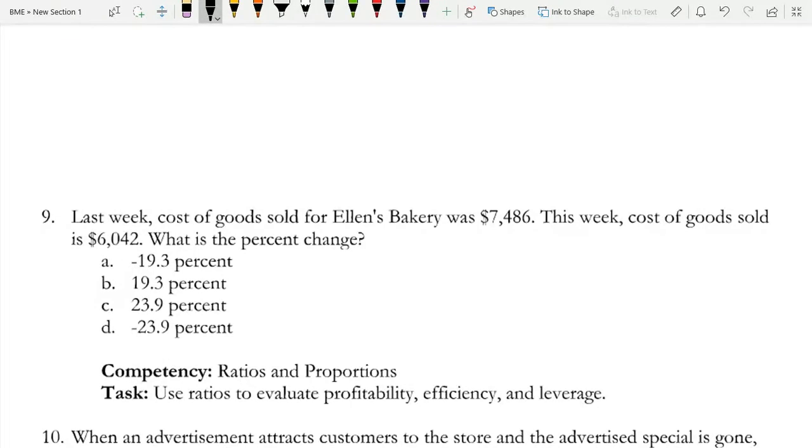Last week, cost of goods sold for Ellen's Bakery was $7,486. This week, cost of goods sold is $6,042. What is the percent change?